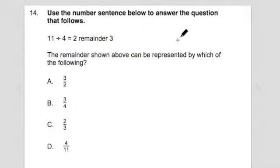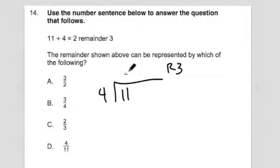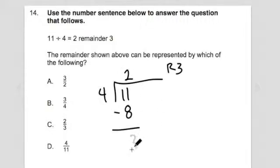One thing that might help is if you rewrite this: 11 divided by 4, remainder 3. So 4 goes into 11 two times — plop down the 8, subtract it, you get 3. And since this 3 is going to start going into the decimals, you could think of it as remainder 3.